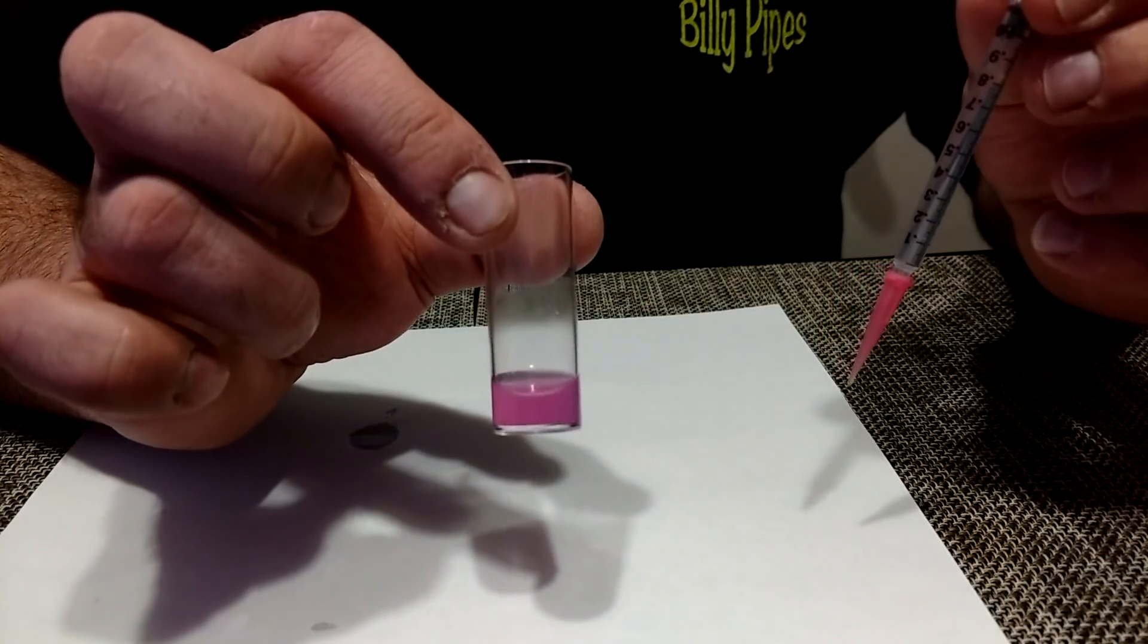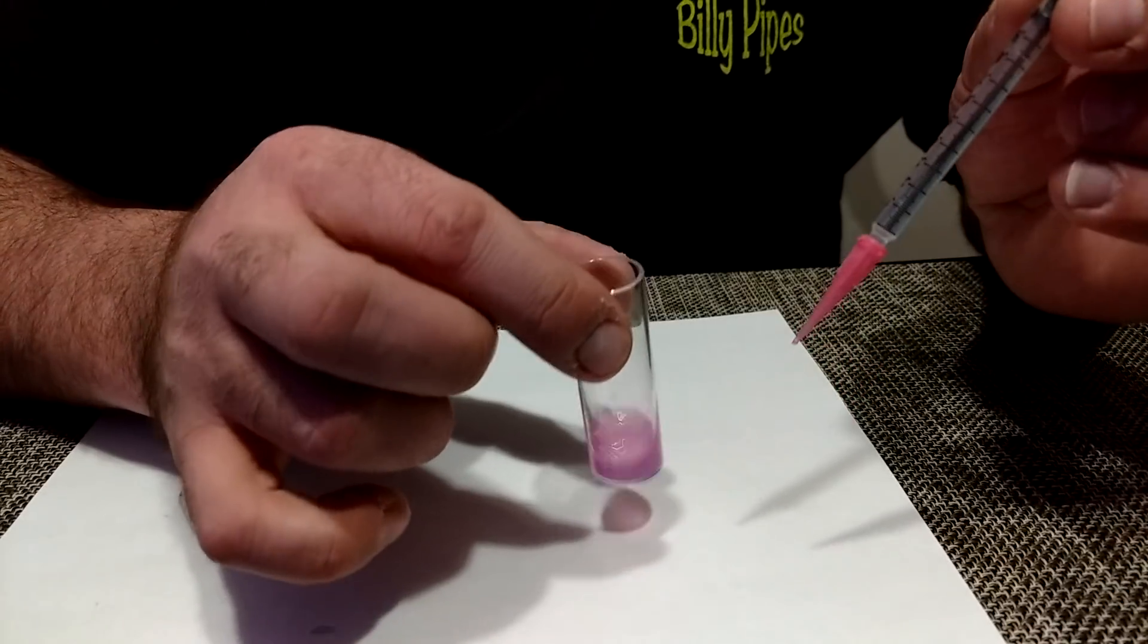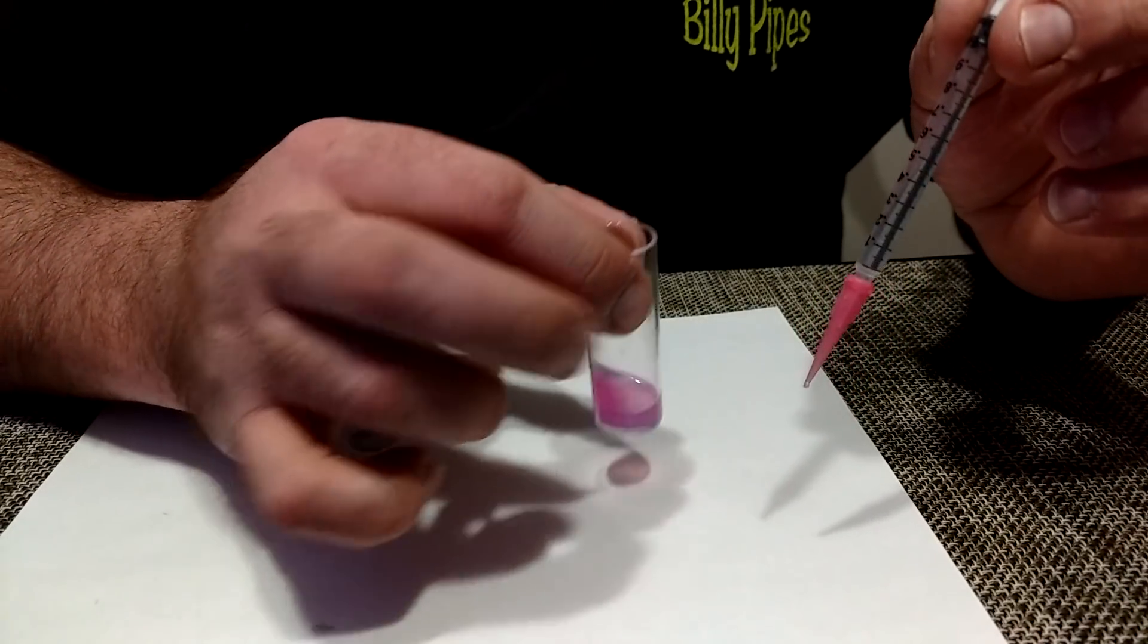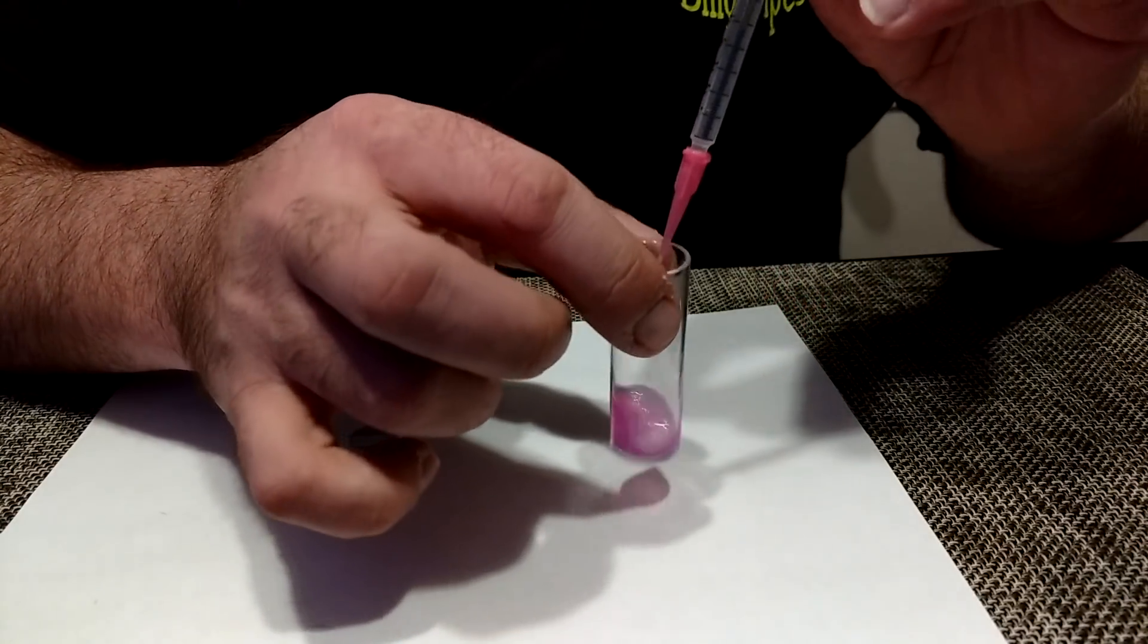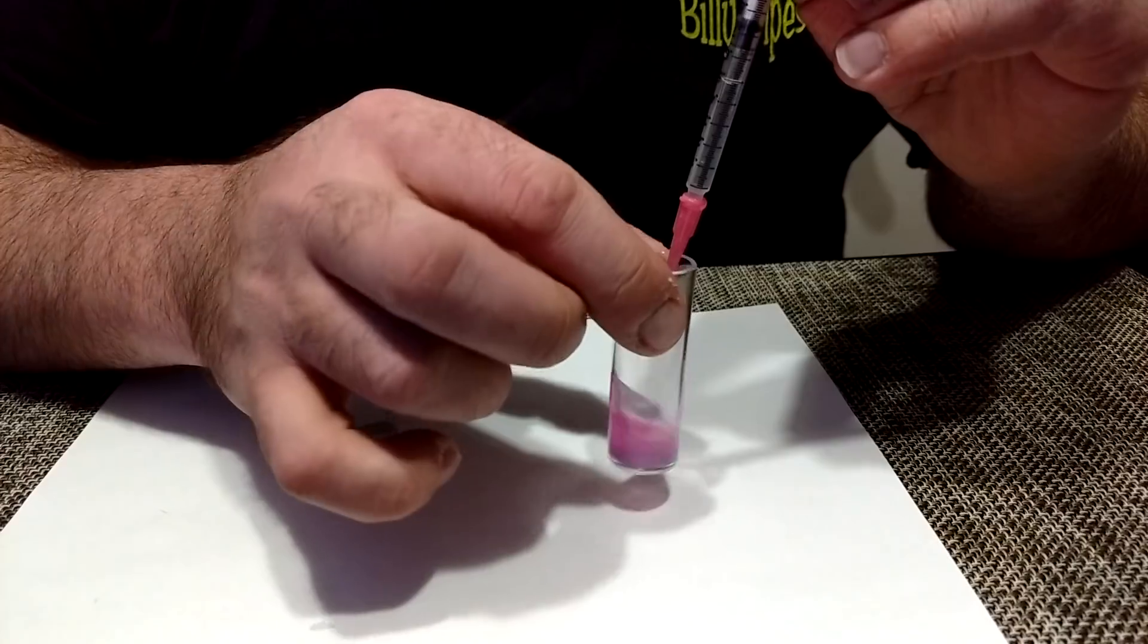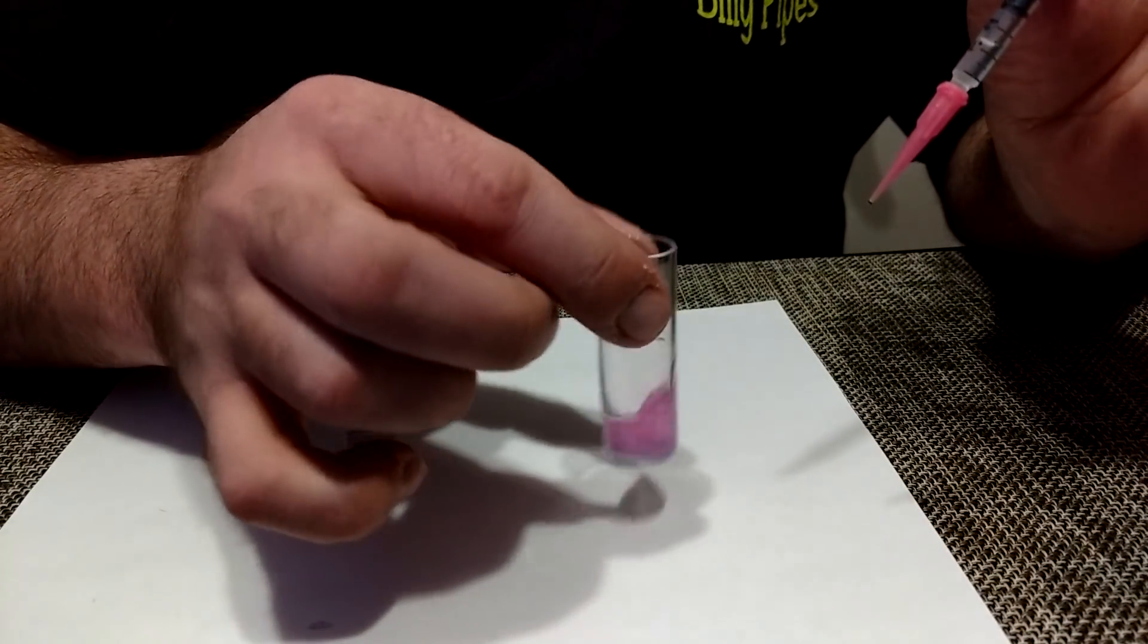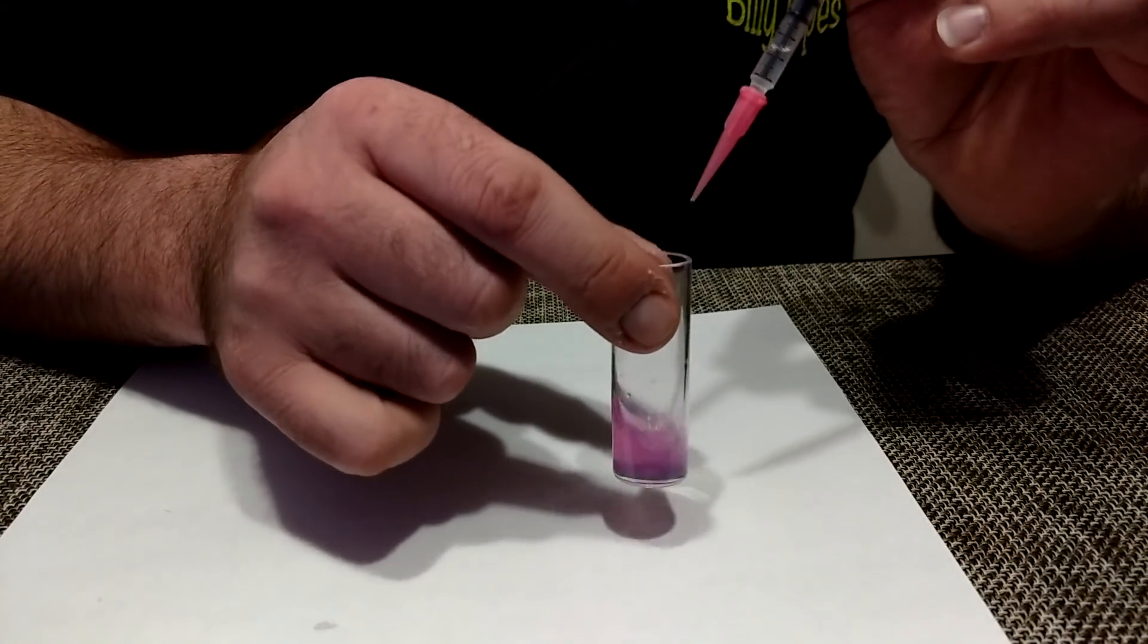Then what you want to do is continue mixing and adding the fluid at the same time. You can go all the way down to about the .3 milliliter line right off the bat. Keep mixing. It's going to be this purple. It's going to change to a blue color.